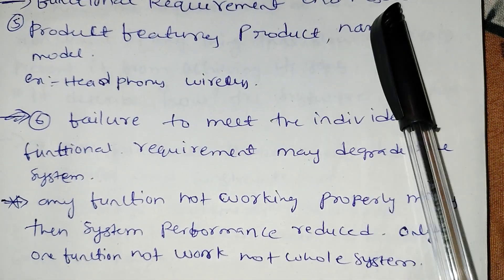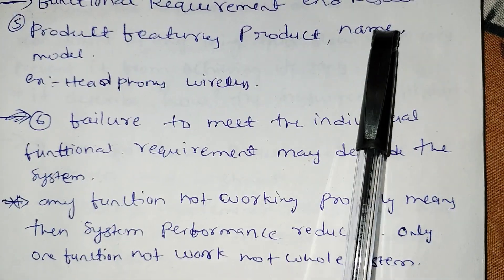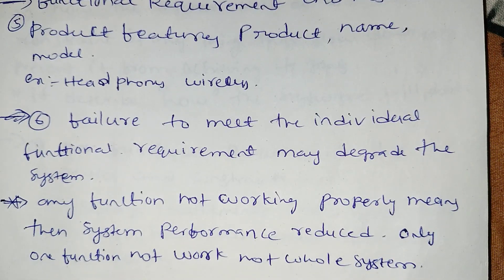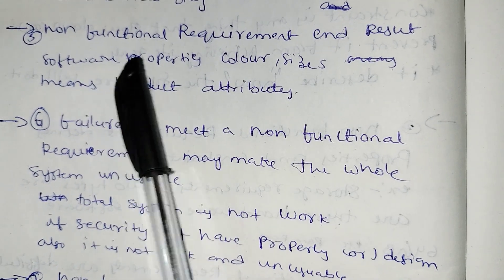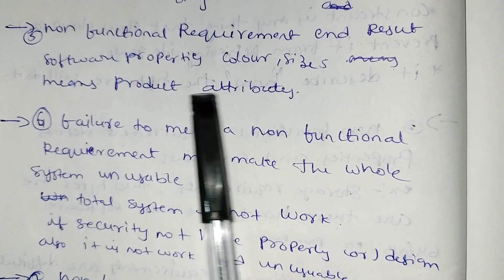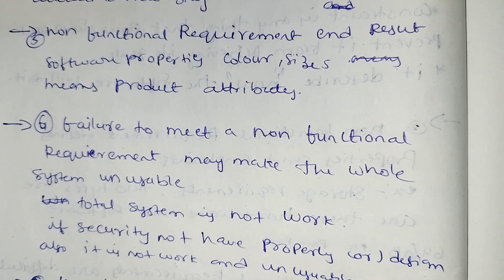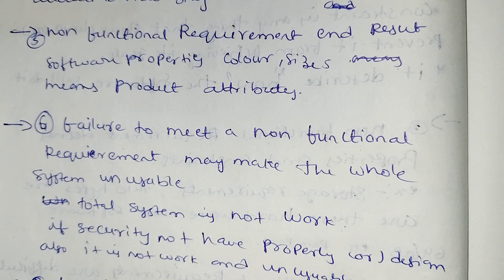The fifth difference: functional requirements relate to end results and product features — such as product name, model, and wireless headphones. Non-functional requirements relate to software properties and product attributes like color and size. Non-functional requirements define attributes such as color and size for the product.